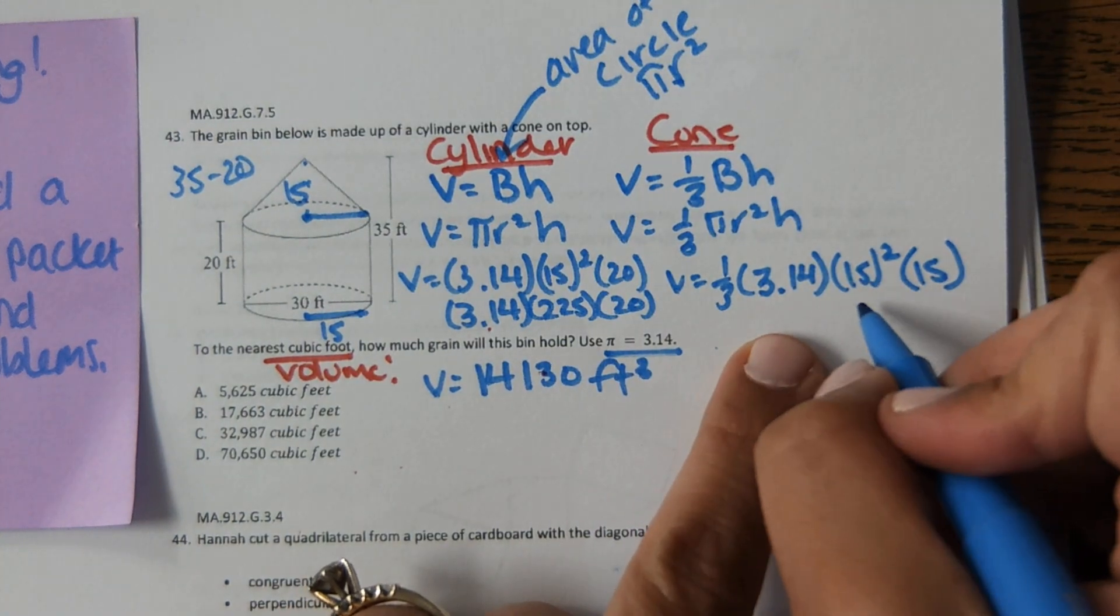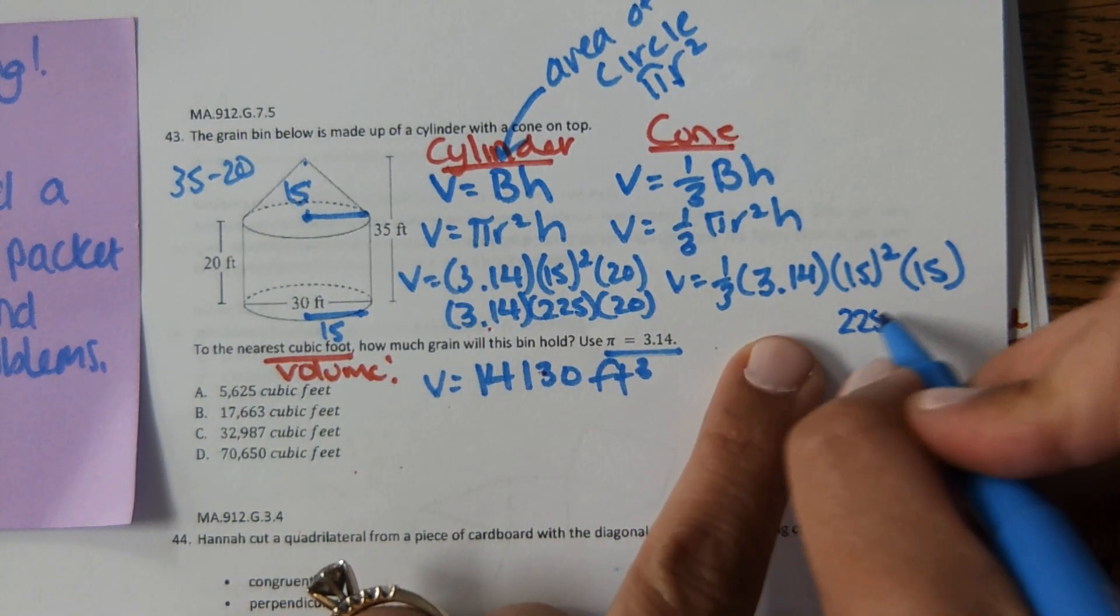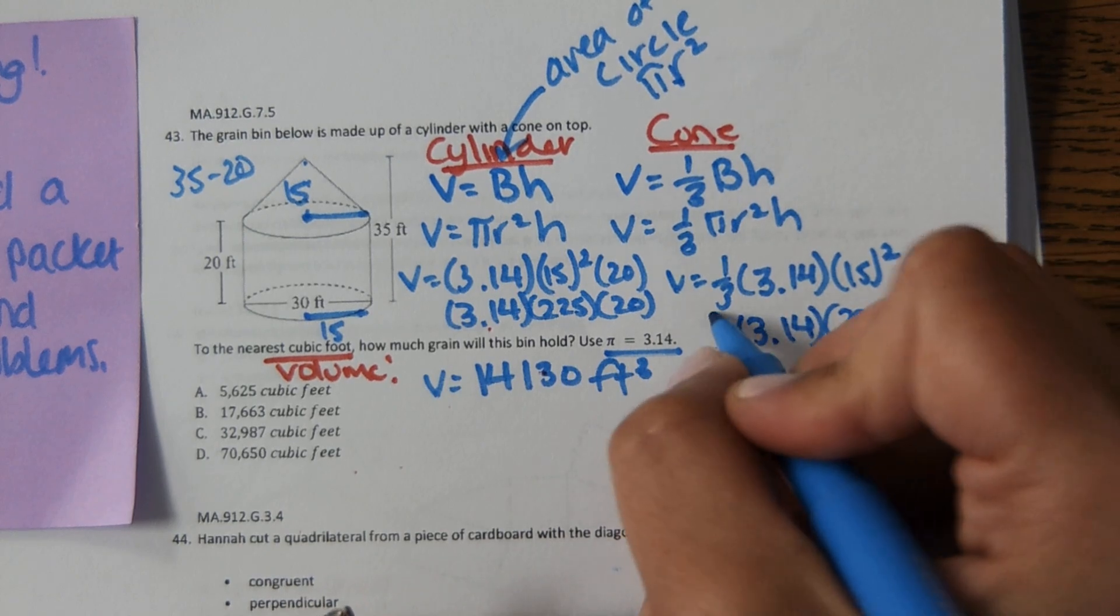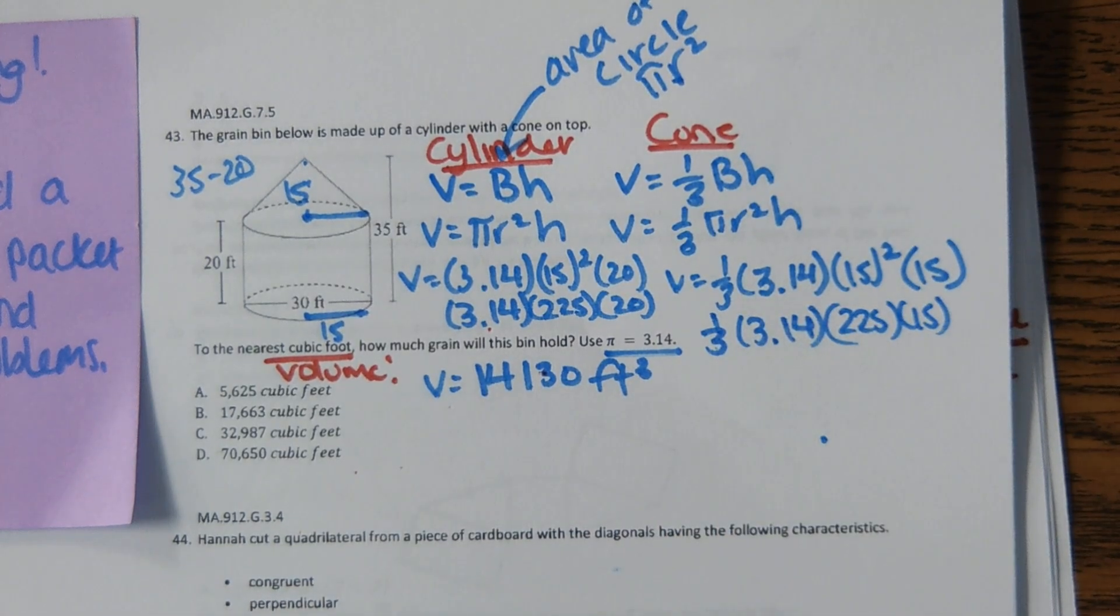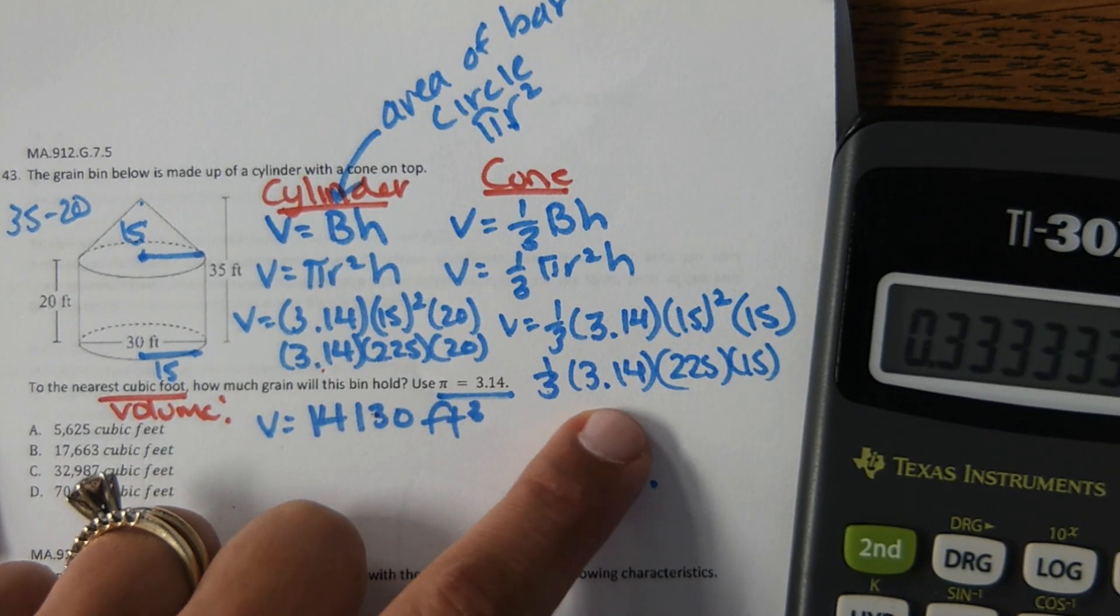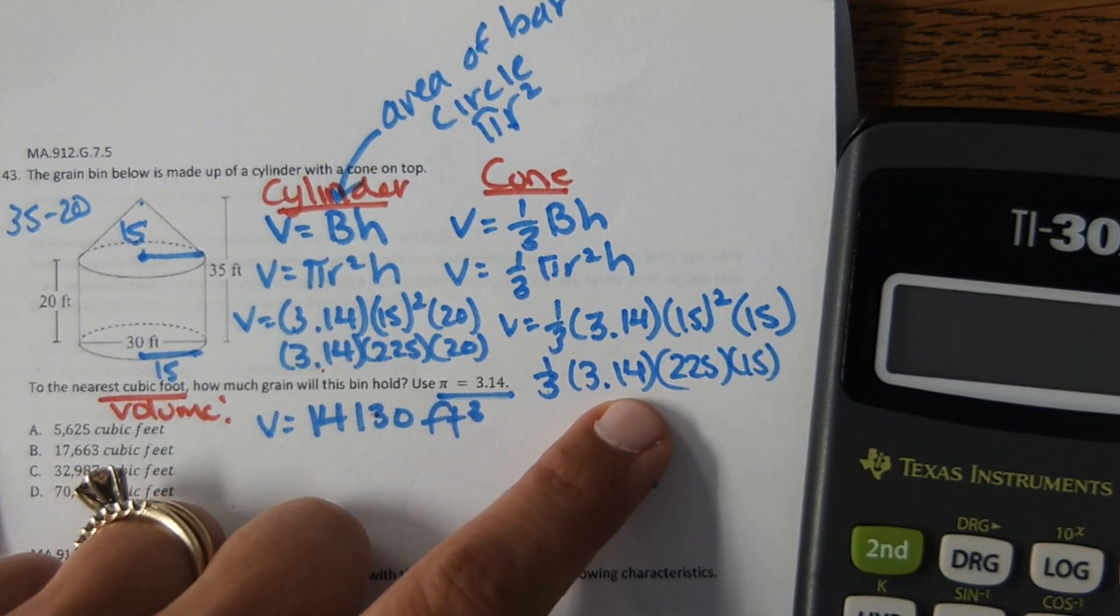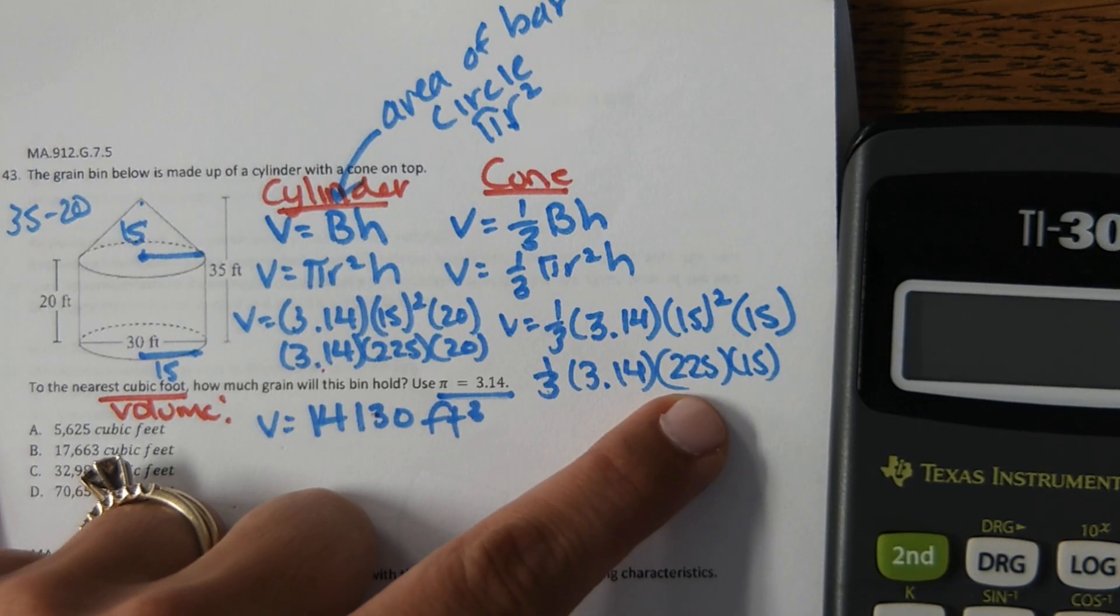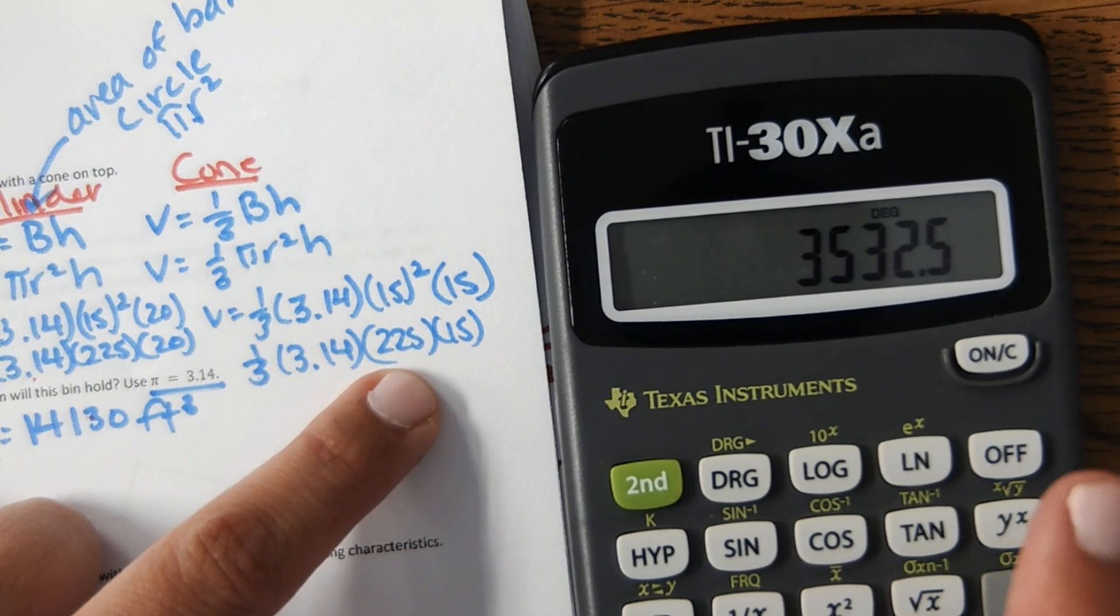And then solving this, make sure to use order of operations. 15 squared is 225. And then in the calculator, one third times 3.14 times 225 times 15 equals this number.